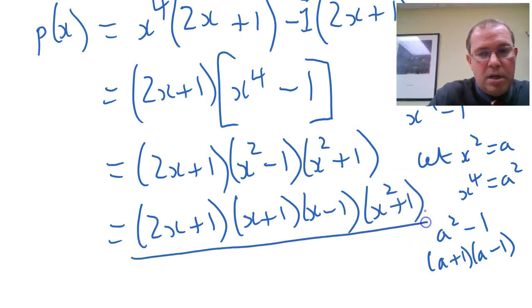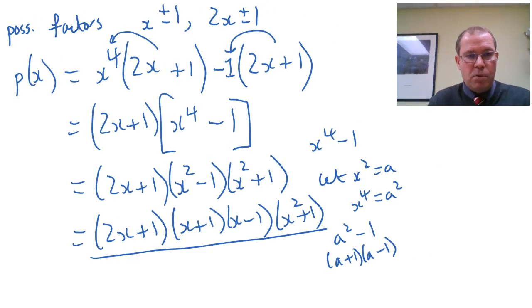If we were to solve x squared plus 1 equals 0, we'd get imaginary roots. There's no real solutions. And so we factored that degree 5 polynomial very quickly. So do look for grouping, and do look for quadratics in disguise. These methods will save you a lot of time.